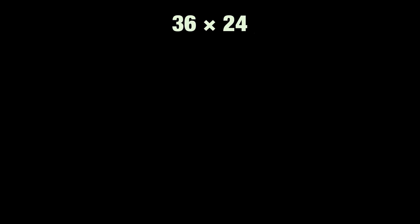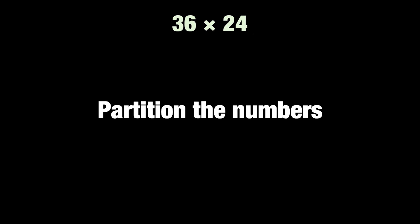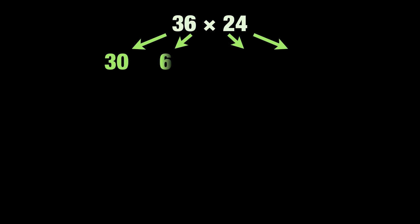Let's look at how to multiply 36 and 24. First we need to partition the numbers. That means break them up into tens and units. They become 30 and 6, times 20 and 4.